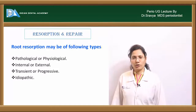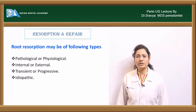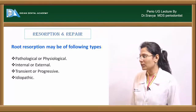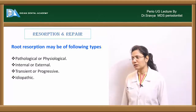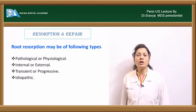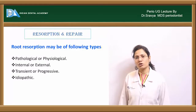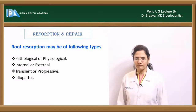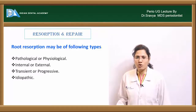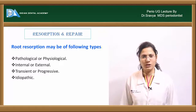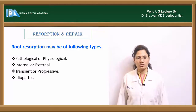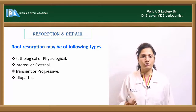Types of root resorption include pathologic or physiological, and internal or external. Internal resorption is also called the pink tooth of Mummery. Resorption can be transient or progressive — for example, excessive prolonged orthodontic forces can resorb the entire root. There is also idiopathic resorption. Physiological resorption occurs in the deciduous dentition, where root resorption precedes natural exfoliation.